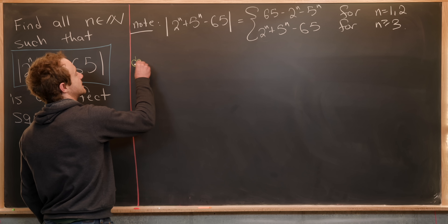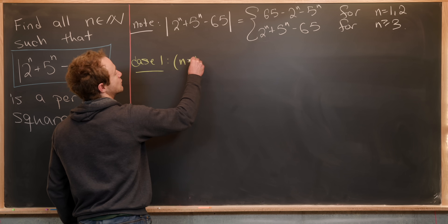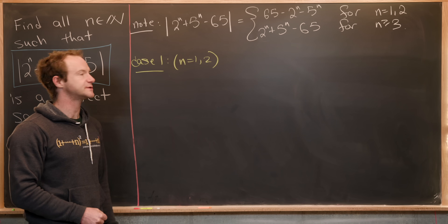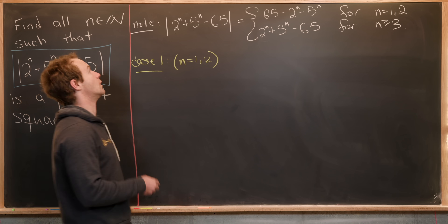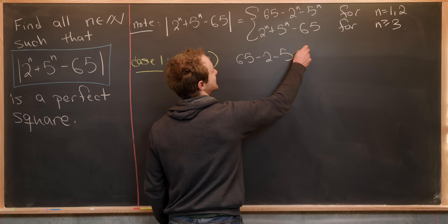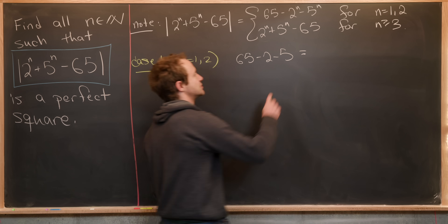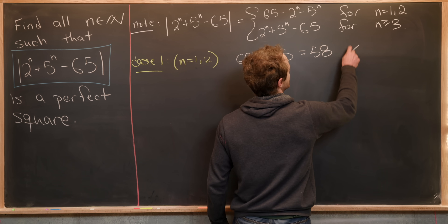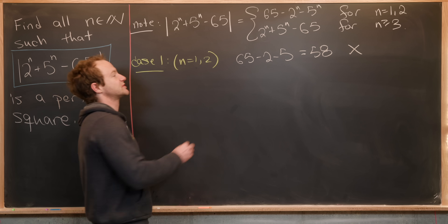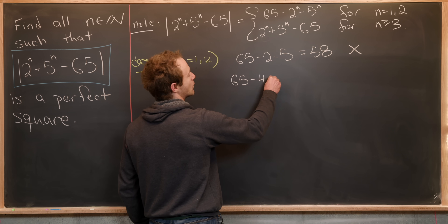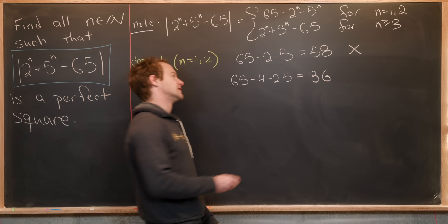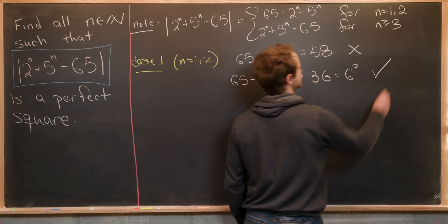Let's look at Case 1: n equals 1 or 2, and check for perfect squares. For n equals 1, we need 65 minus 2 minus 5, which is 65 minus 7, equaling 58. That's not a perfect square, so no solution there. For n equals 2, we get 65 minus 4 minus 25, which equals 36. Since 36 is 6 squared, we have a solution at n equals 2.